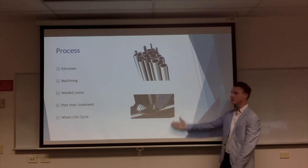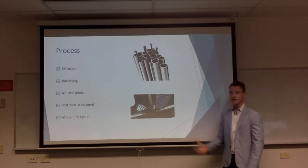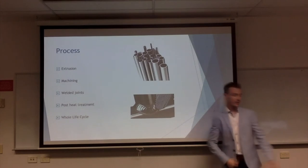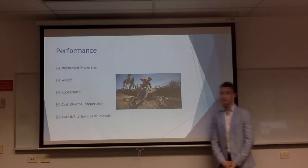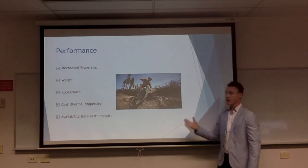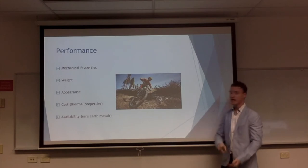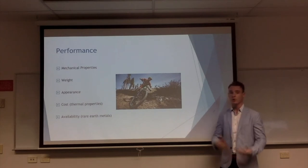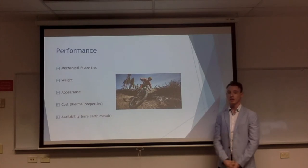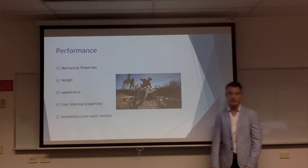Welding of joints is similar to aluminium, as you can see here, and over its whole life cycle, this magnesium alloy is recyclable just like aluminium. Electron 43 performs great in all mechanical properties needed for a bicycle frame and is extremely lightweight. The appearance is the same as bicycle frames purchasable today, but it is not very cost effective due to all the rare earth elements added to achieve its properties. I will hand it over to Dabo to talk about the third material.